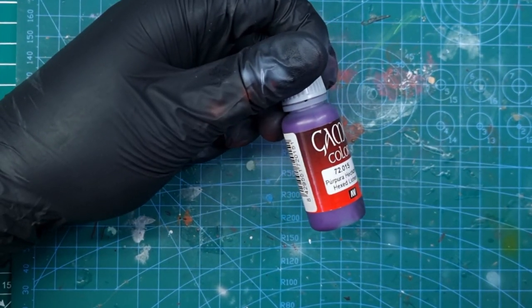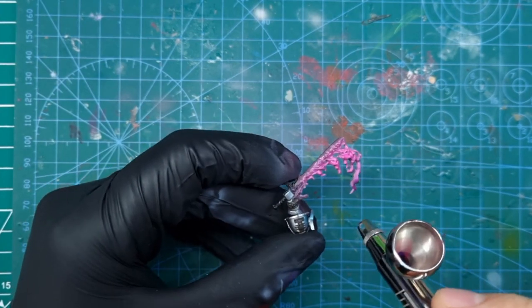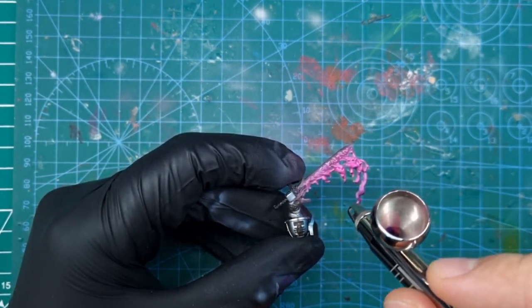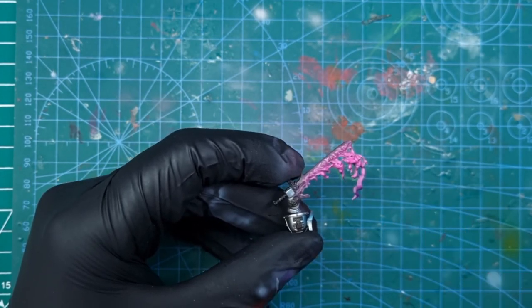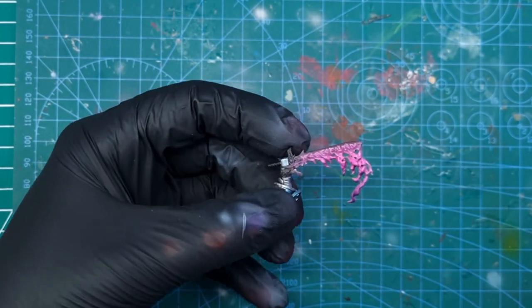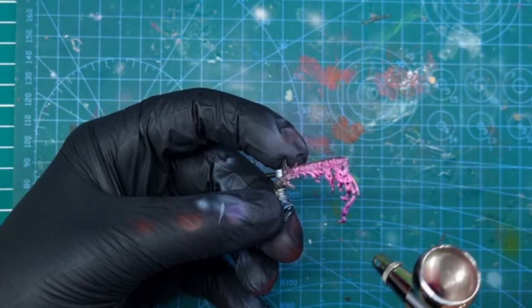Next I put the purple color Hexed Legion from above, only at the tips of the flame. It will enhance the contrast in the end. You can add a little bit of black paint to the purple color to obtain even better contrast, as I did.